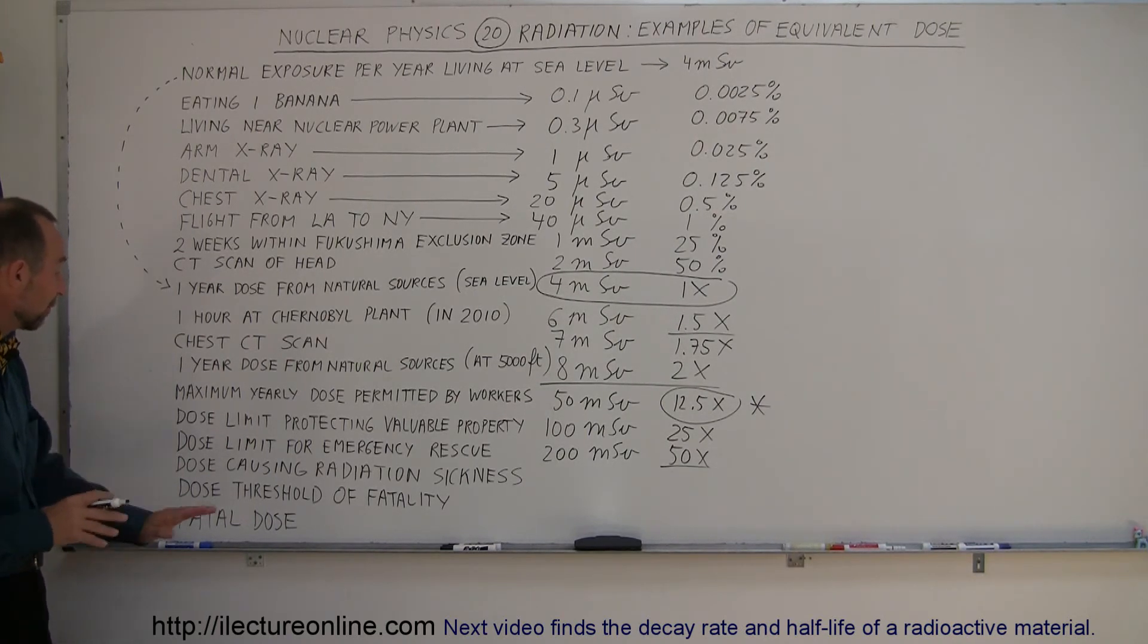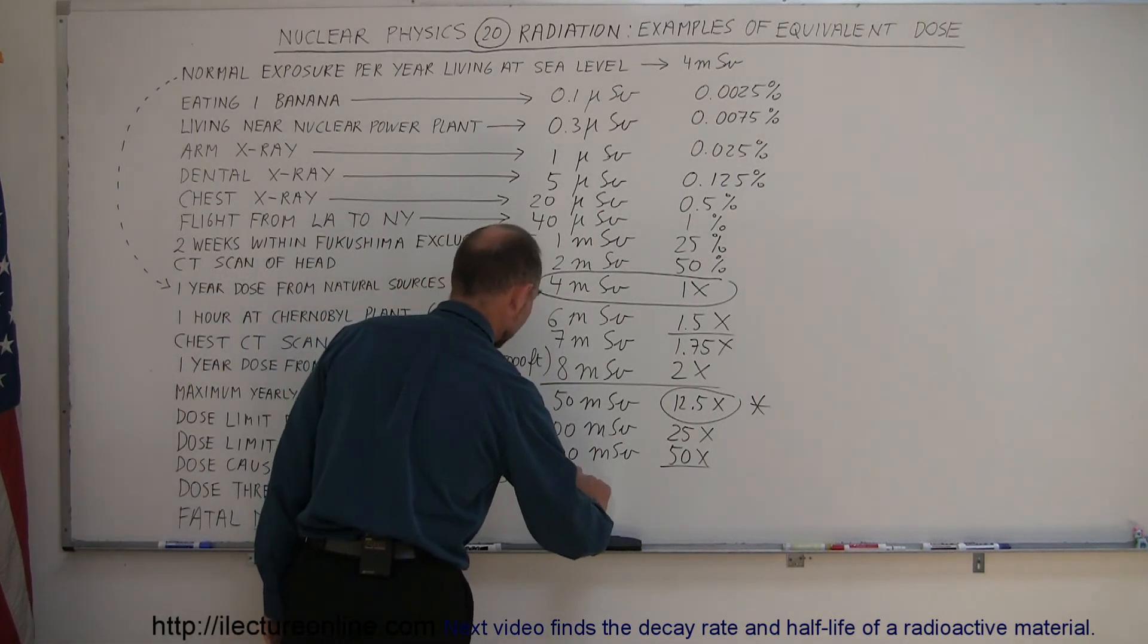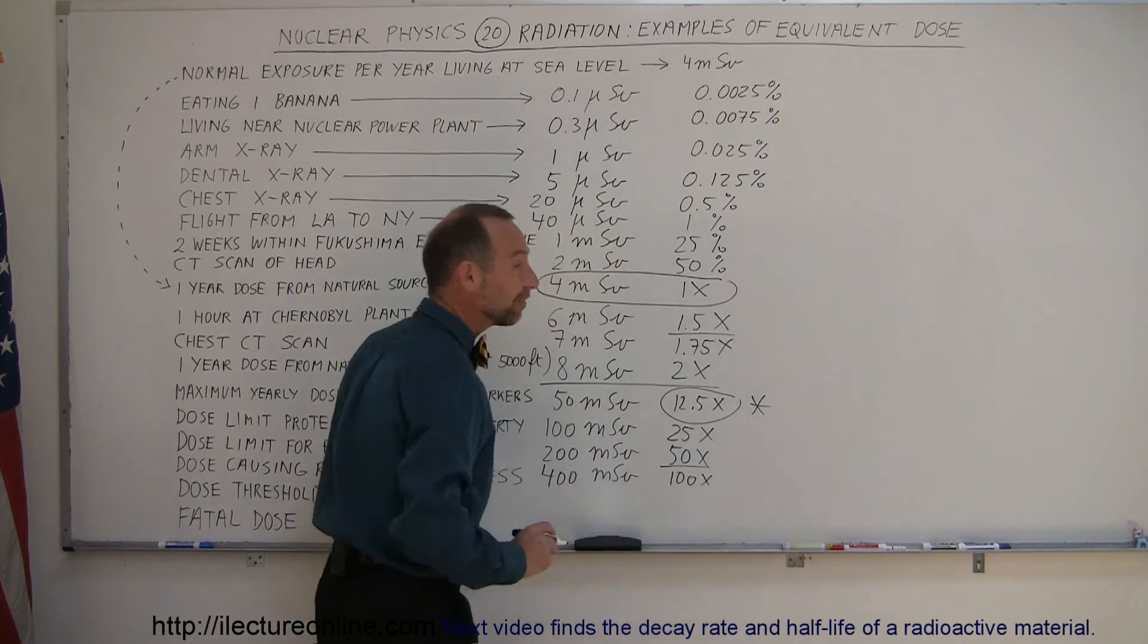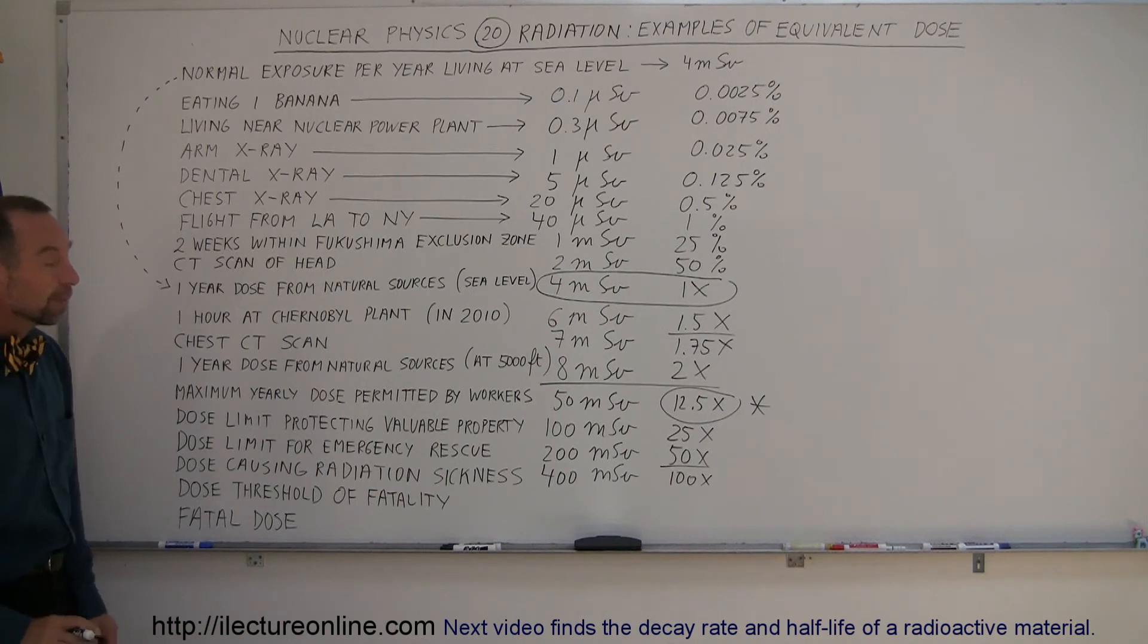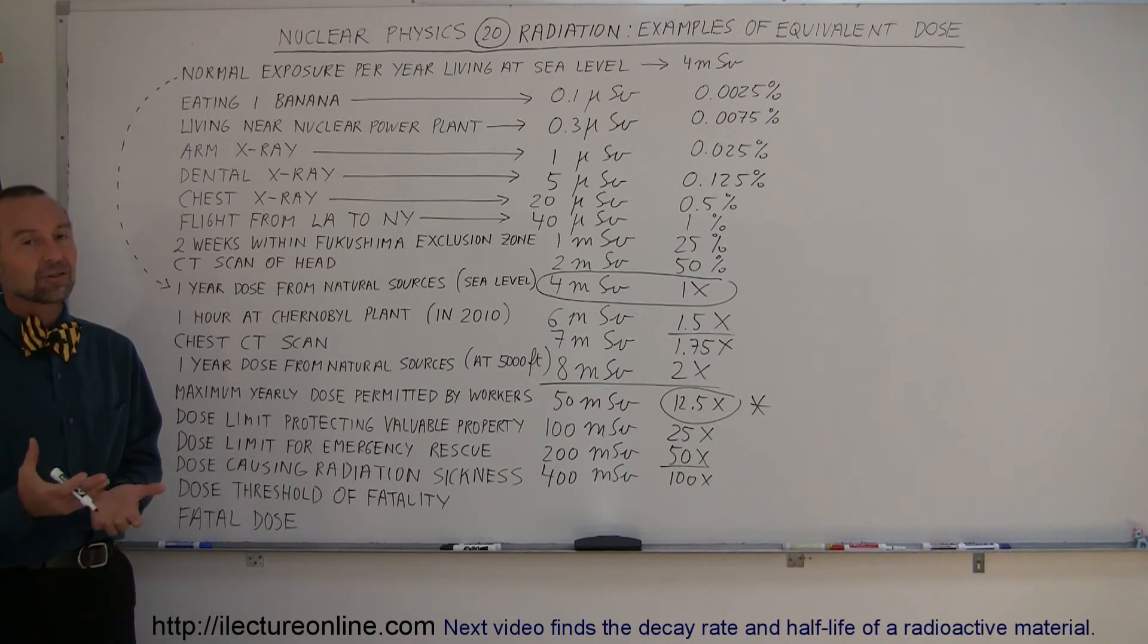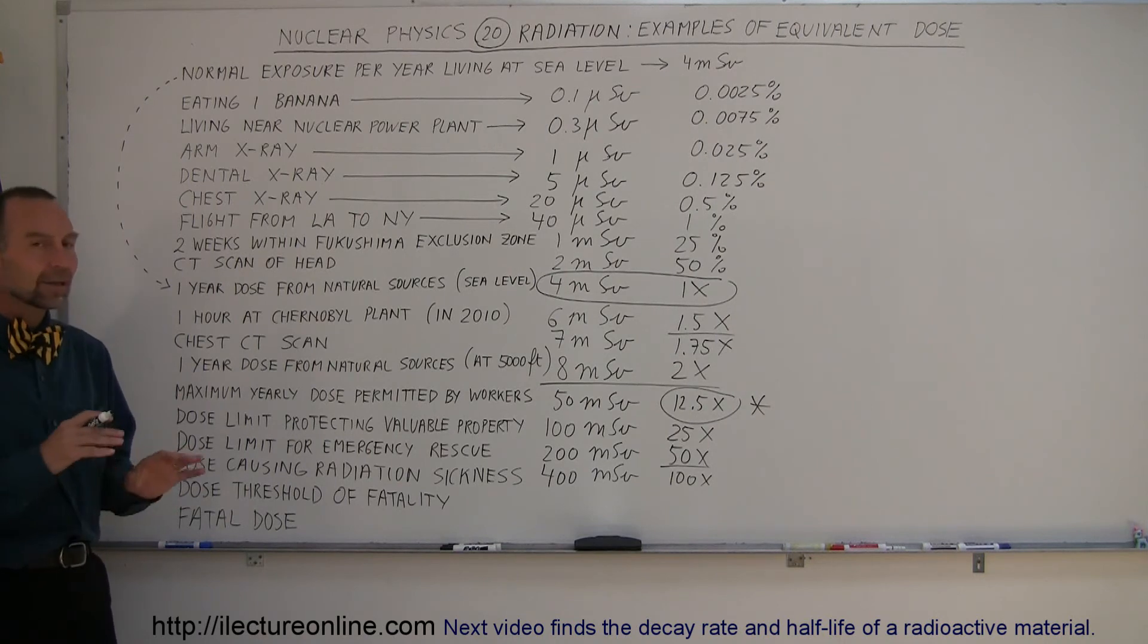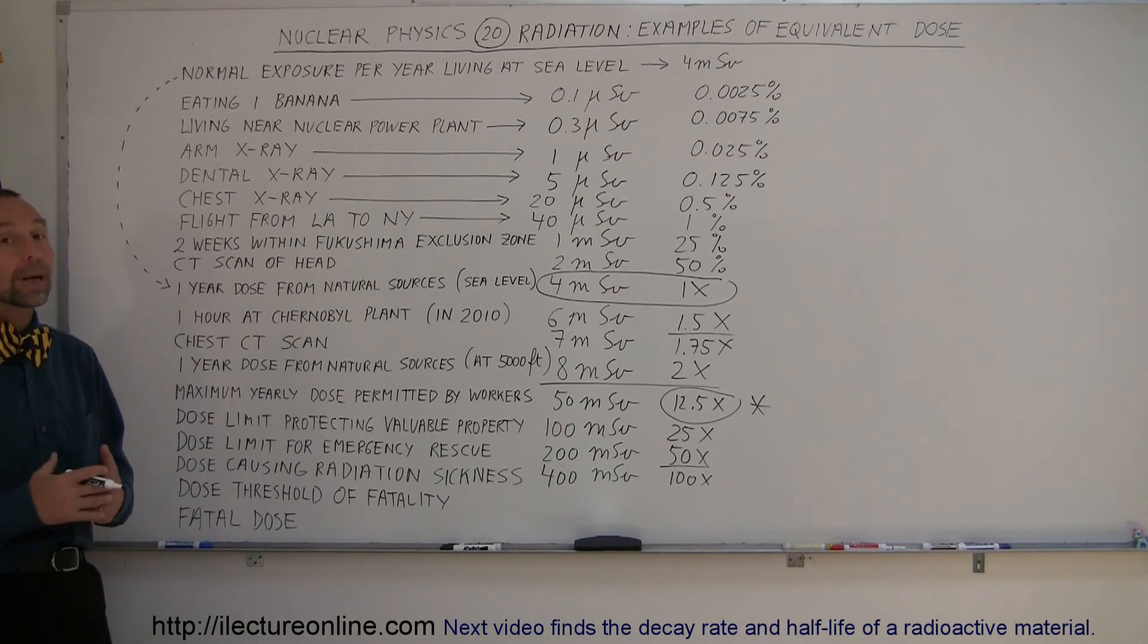To put that into perspective, if you receive twice as much of that, if you start receiving 400 millisieverts of radiation, which is 100 times what people receive typically living on the earth for a year, you're going to begin to feel sick. There actually is going to be some noticeable effects on you. You start getting symptoms of fatigue, pain, exhaustion, things like that, kind of the way you would feel when you begin to get sick from a normal illness. That means that you're now experiencing what they call radiation sickness.